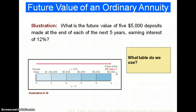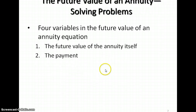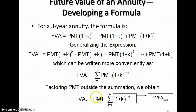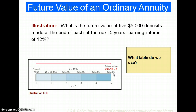This table is commonly referred to as the future value of an ordinary annuity — oftentimes it is Table 3. If it isn't labeled as such, it can be found by using the formula we saw earlier. Now let's take a look at an example: what is the future value of five $5,000 deposits made at the end of each period for five years, earning an interest rate of 12%? At the end of year one we deposit $5,000, same with years two, three, four, and five.